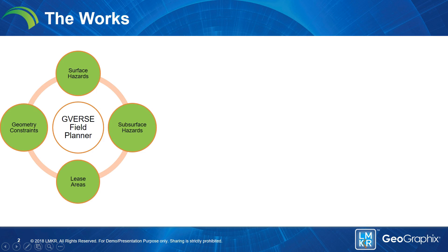G-Verse Fuel Planner will automatically lay out pads and wells all over the map given certain constraints. There are four of them: geometry constraints, surface hazards on top — which are existing wells, existing paths, and places where you can't put a pad such as hilly areas — and subsurface hazards, which are wells underneath the earth where you can't plant new wells.